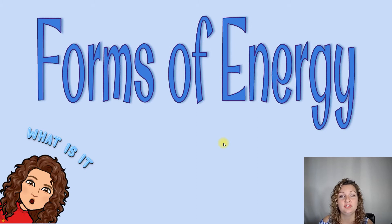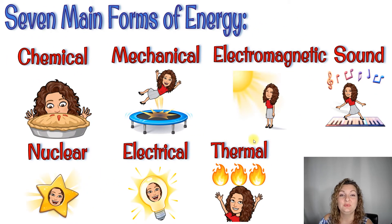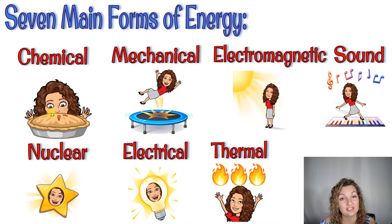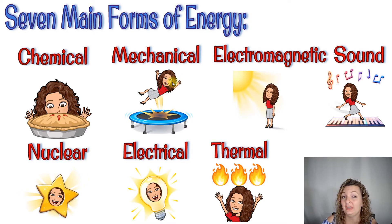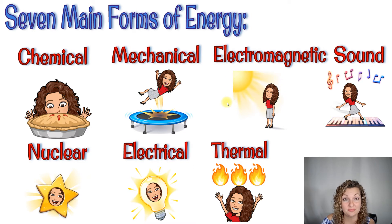Next one is forms of energy. There are lots of forms of energy — try to figure out if you know them all. We have chemical energy; a good example would be food — it's going to be in storage. Mechanical energy is the one that's potential or kinetic; jumping on a trampoline is a great example. Electromagnetic is just another way of saying radiant or light energy — anything off the electromagnetic spectrum.